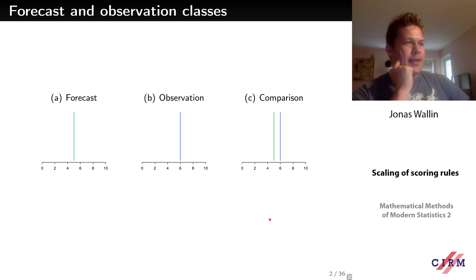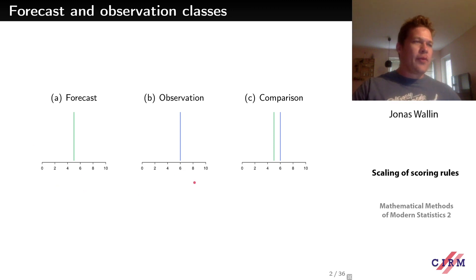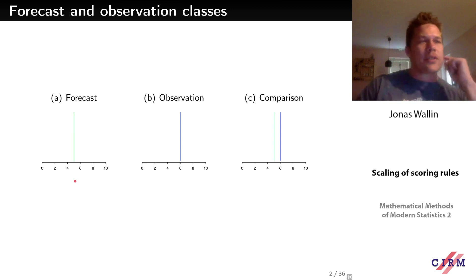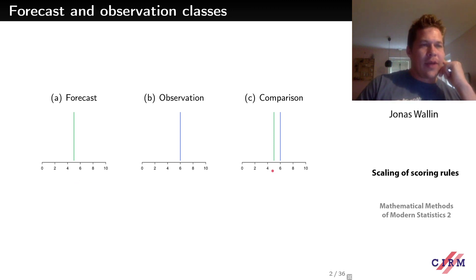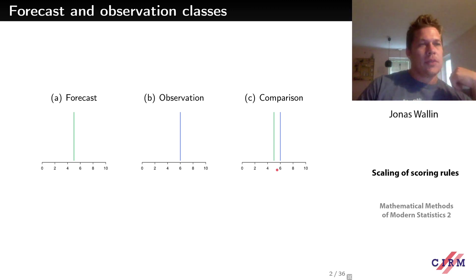The simplest setting is that we have a single forecast which is a scalar — call it 'a' — and then we're making observations and we want to evaluate how good this forecast is compared to the observations. So we have two points and we want to make some comparison, whatever distribution we assume.